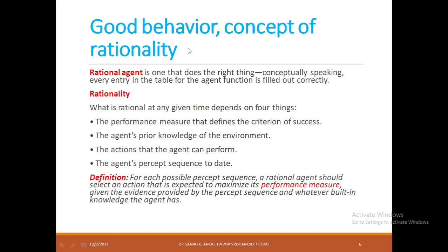Let us see what is good behavior and the concept of rationality. A rational agent is one that always does the right thing, and it depends on four different parameters: the performance measure that defines criteria for success; what is the agent's prior knowledge of the environment; what actions the agent can perform; and what is the percept sequence to date. These four things define the perfect rational agent. The definition is: a rational agent should operate in the environment and try to optimize performance.